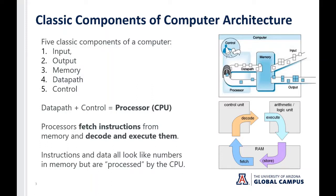Essentially, it's the processor's job to fetch instructions and data from memory, to decode them in the control unit, to execute them in what's called the ALU or the arithmetic logic unit, and then to store the results back to either registers within the CPU — which are really fast storage areas — or back to general memory, represented by RAM, random access memory. RAM is memory you can quickly read and write to, but when you turn the computer off, it disappears.